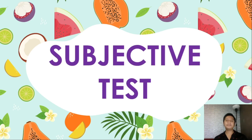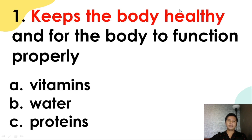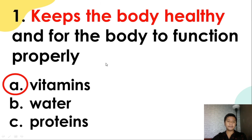Now let's go to our subjective test, which can help you answer your worksheet. The first question: what keeps the body healthy and helps the body to function properly? Is it A, vitamins? B, water? Or C, proteins? The keyword is 'keeps the body healthy.' The correct answer is letter A, vitamins.